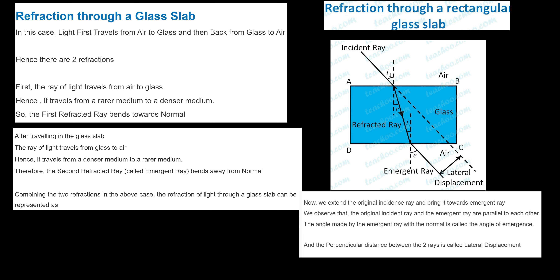The second refracted ray bends away from the normal. Combining the two refractions, the refraction of light through a glass slab can be represented like this.